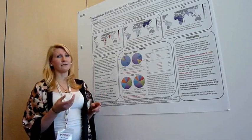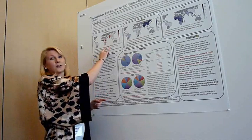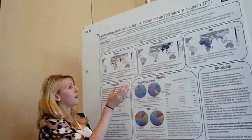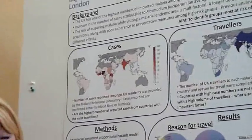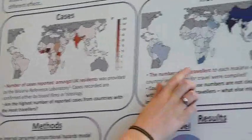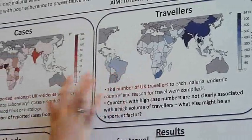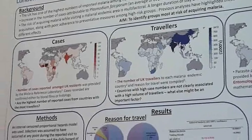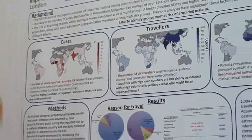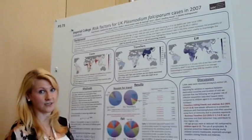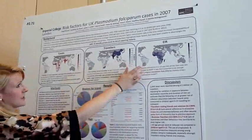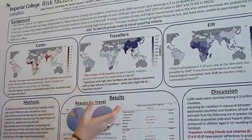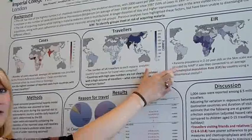Data from the Malaria Reference Laboratory was provided to look at the cases. The initial thought is whether cases are just a function of the number of travellers going to a certain area. Looking at the map of travellers, there's clearly no real relationship between these two. Another thought might be that it's just the force of infection somebody experiences when they go away. There is a more direct relationship there, but it's more likely to be a mixture of these two factors.